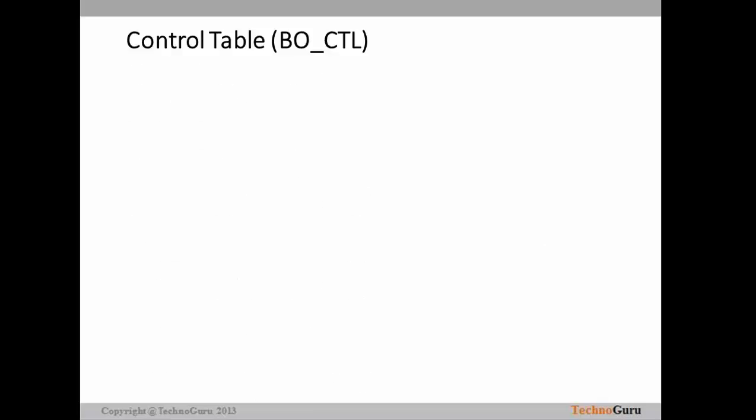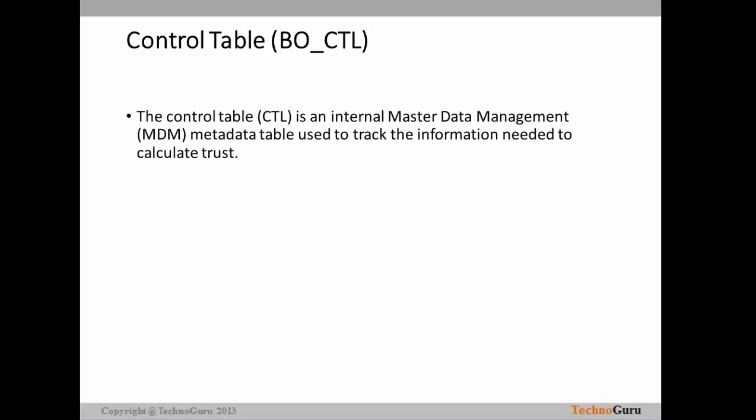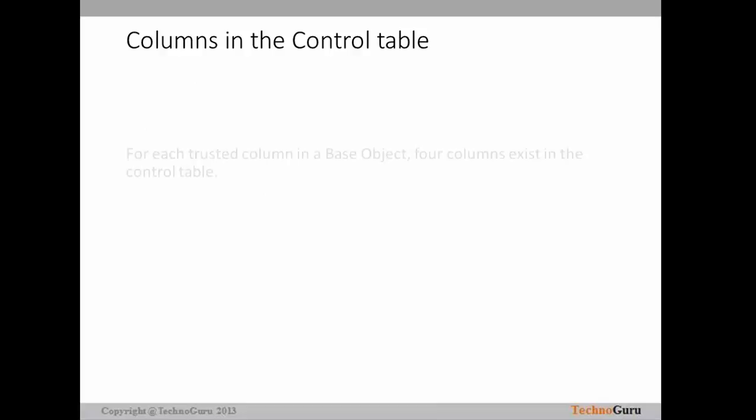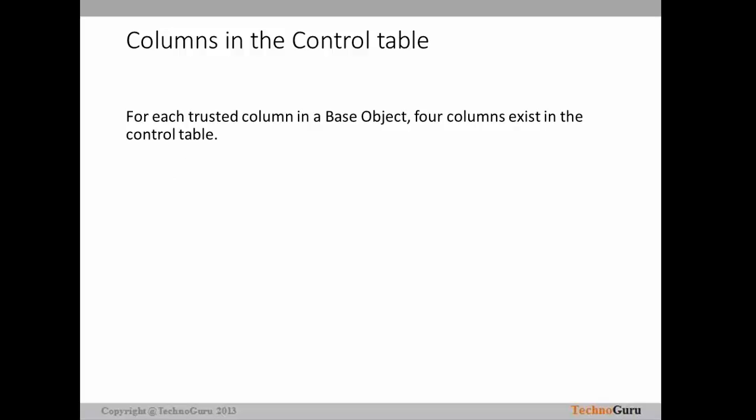The first table used is named as the control table. If your base object name is C_PO_party, then the control table associated with that table will be appended with underscore CTL. The CTL table is an internal master data management metadata table which is used to track the information needed to calculate the trust. Let's see what are the columns in the control table. For each trusted column in the base object, four columns exist in the control table.